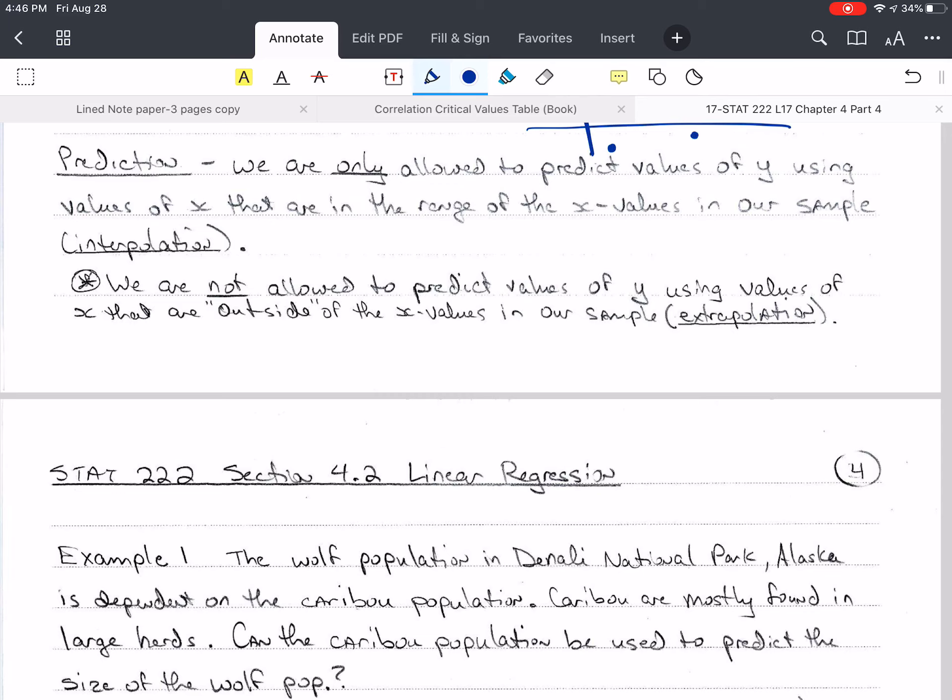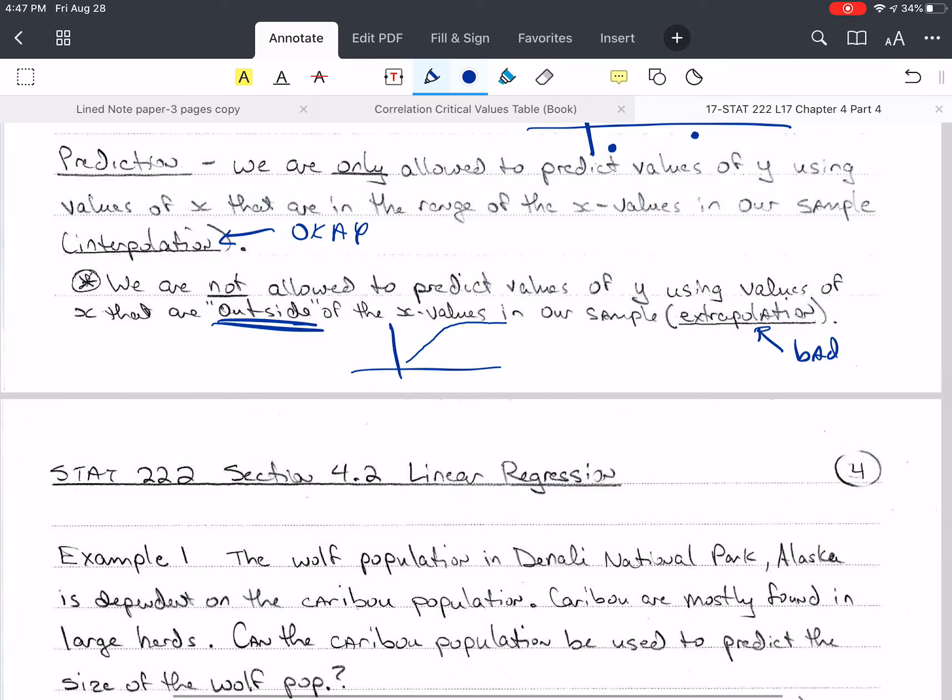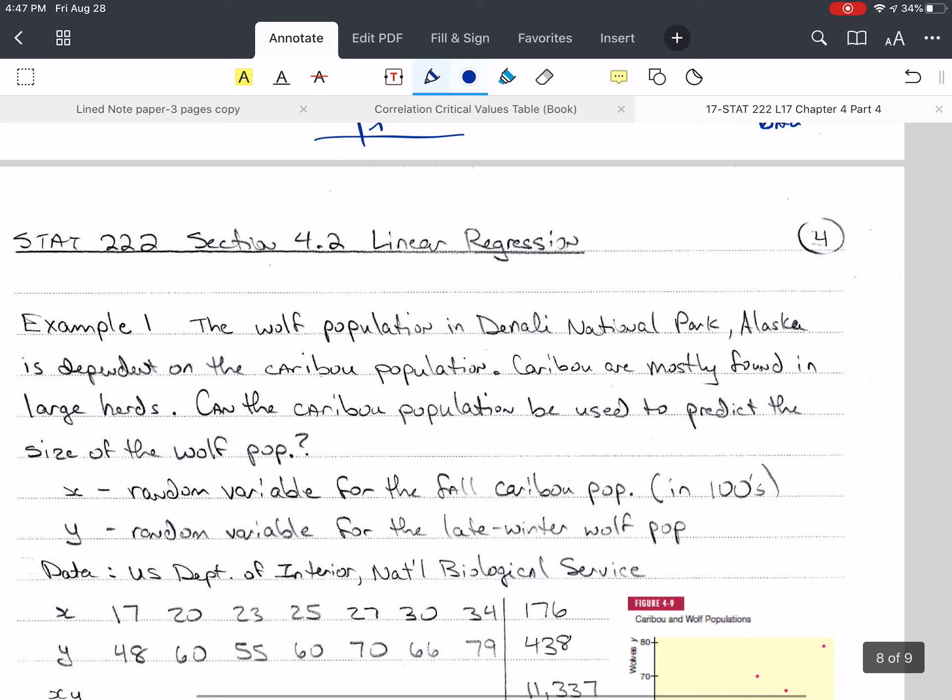Prediction. We're only allowed to predict the values of y using the values of x that are in the range of the data of our sample. This is called interpolation, and interpolation is okay. We're not allowed to predict values of y using values of x that are outside of the x values in our sample. This is called extrapolation, and that's bad. The reason for that is that it may be that our real shape is something like this. If we take the data here, we see only that part, but as soon as we go outside here, it changes pretty significantly.